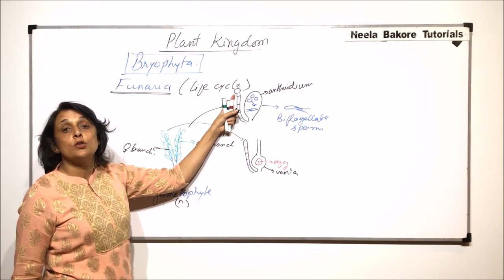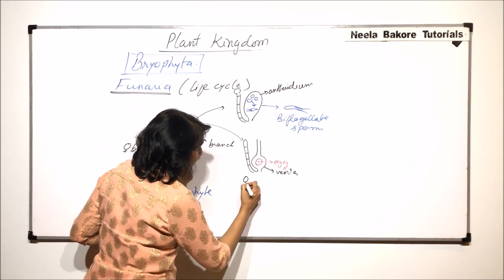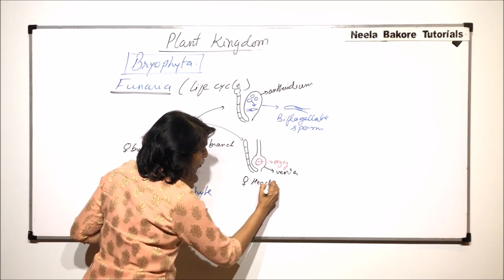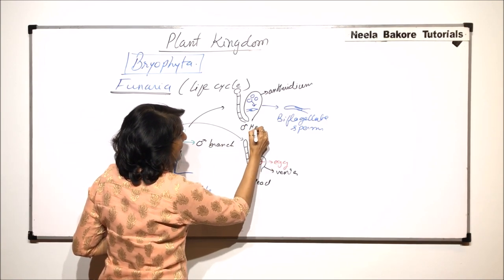So here it was with swollen terminal cell whereas here it is. Now so this is the female head with the female sex organ. And this is the male head.